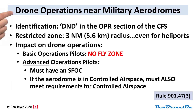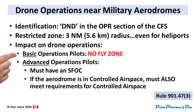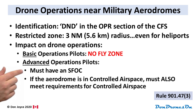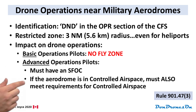Drone operations near military aerodromes. You can identify military aerodromes because they will say DND in the OPR section of their CFS listing. They have a drone restricted zone of 3 nautical miles or 5.6 kilometers in radius from the center of the airbase — and it's 3 nautical miles even if it's just a heliport. For basic operations drone pilots, this is a no-fly zone. Advanced operations pilots may fly in this restricted zone but only if they have an SFOC — Special Flight Operations Certificate — in place for the mission. And if the aerodrome is also in controlled airspace, which most of them are, you must also meet the requirements for controlled airspace.